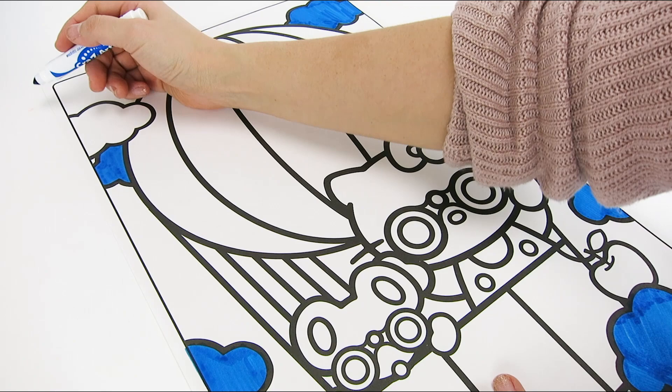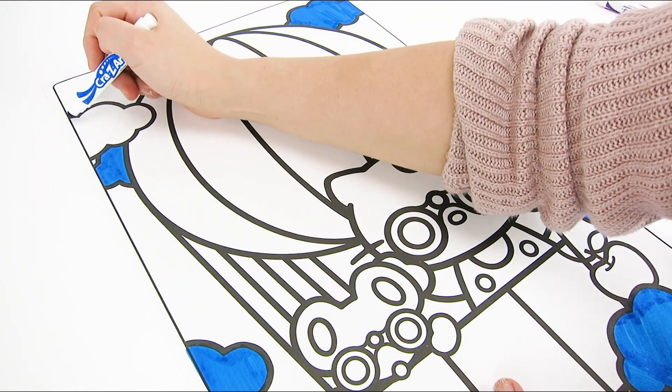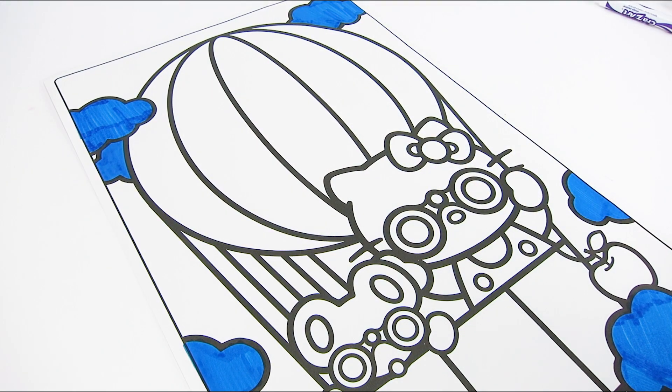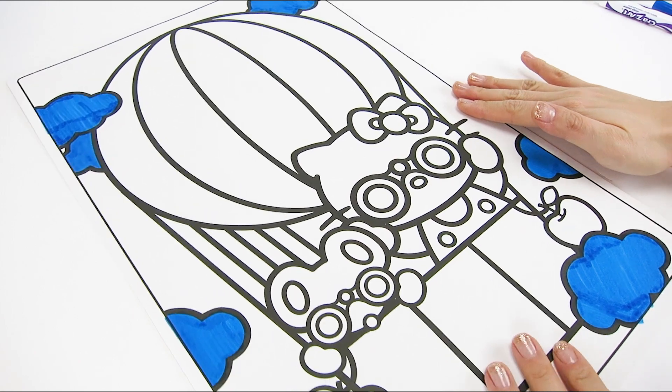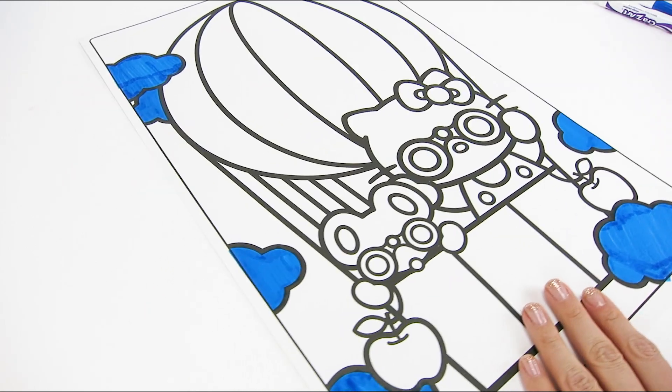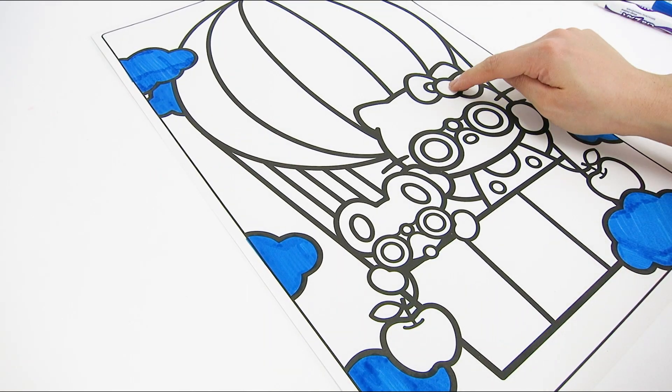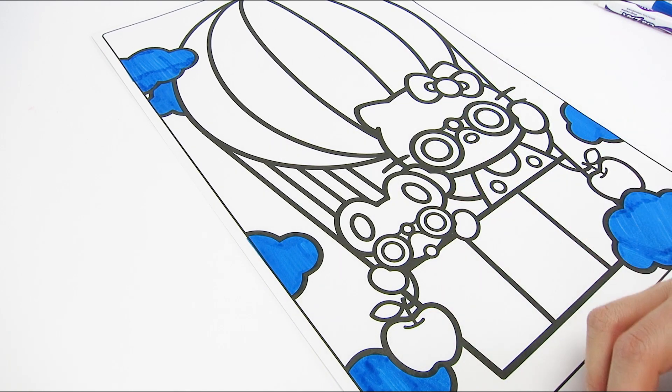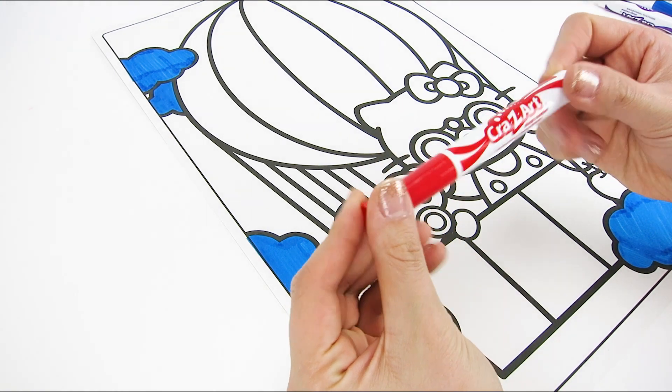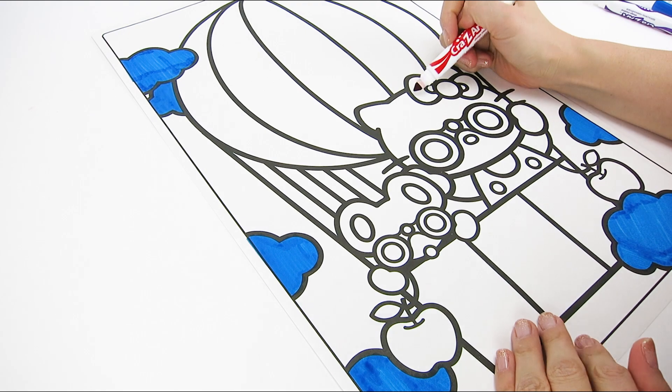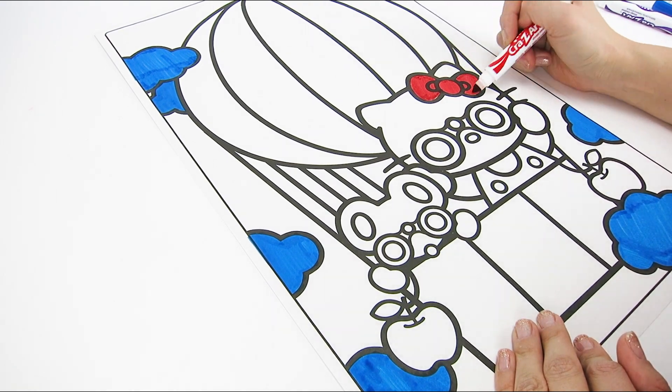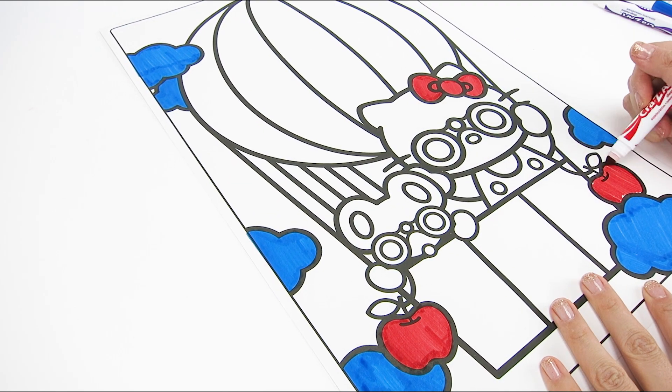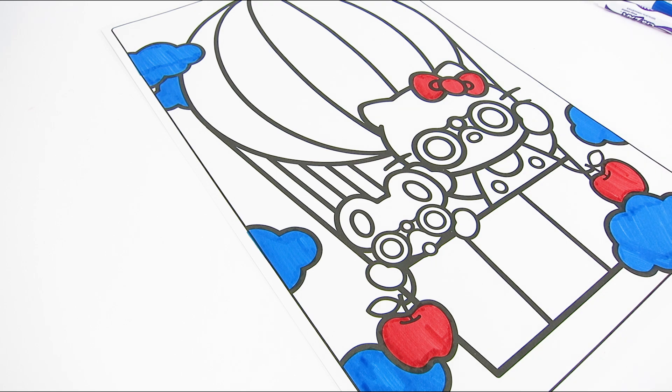Oops, I almost missed one. There we go. Okay, what should we color next? How about Hello Kitty's bow and the apples? Wait, what color are apples again? Oh yeah, they're red. Wow, that looks great.